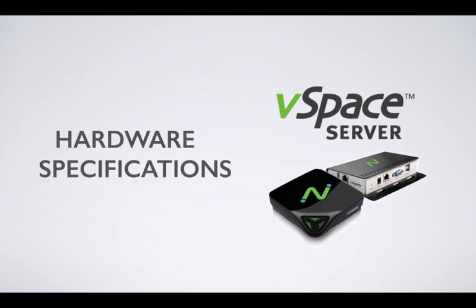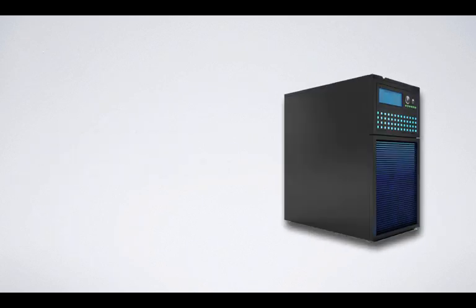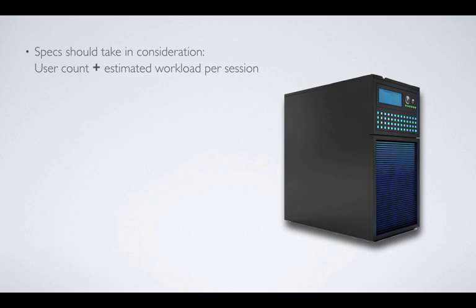Hardware specifications. The hardware specifications of a given vSpace server will vary depending on the number of users connecting at any given moment and the type of work they're expected to perform. Generally speaking, a quad-core processor and 8GB of RAM will serve as a good starting point when designing a host. While SSD hard drives are recommended due to their fast read and write speeds, a standard high RPM disk drive is often sufficient for moderate workloads.